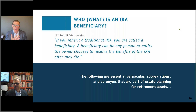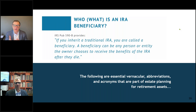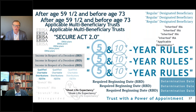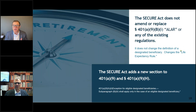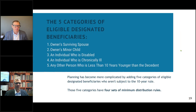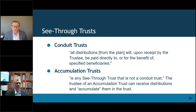You have what Natalie Choate calls a 'plain old designated beneficiary,' which is really any person who is not an eligible designated beneficiary — that's the new one introduced by the SECURE Act. There are five eligible designated beneficiaries, and those are the only ones who still can take a life expectancy payout. I want to talk about where charities come into play as one of those beneficiaries.